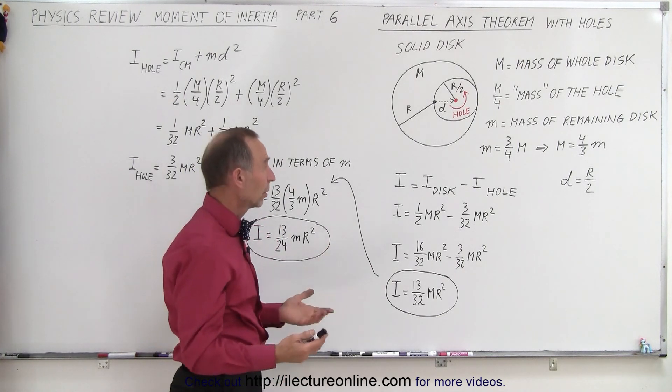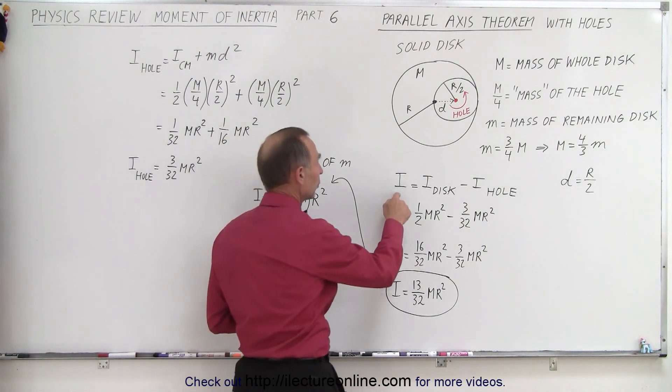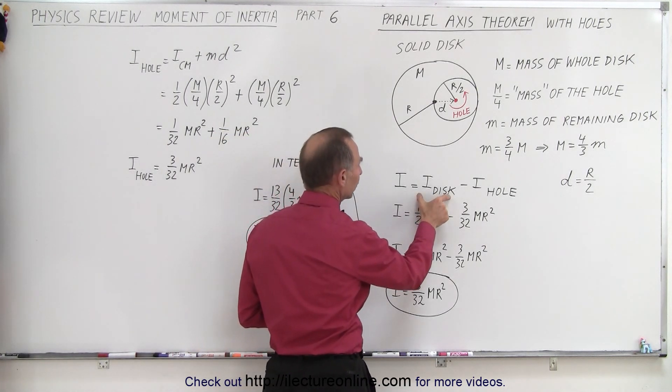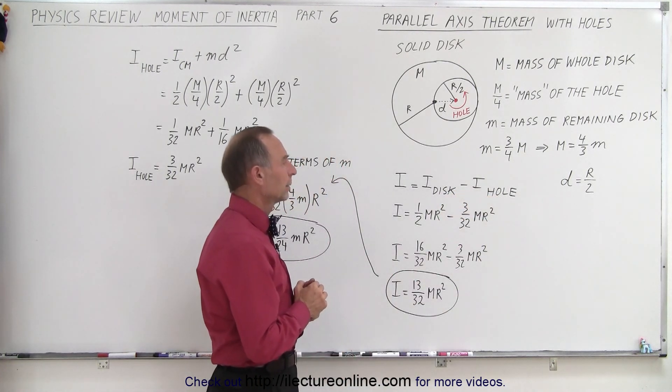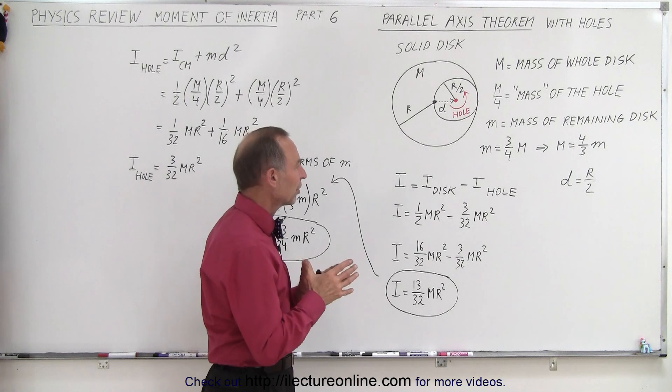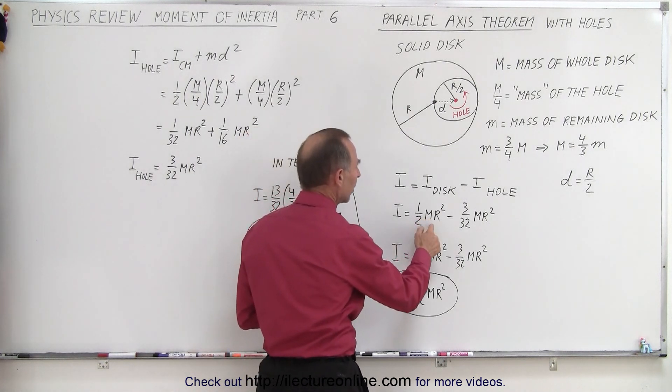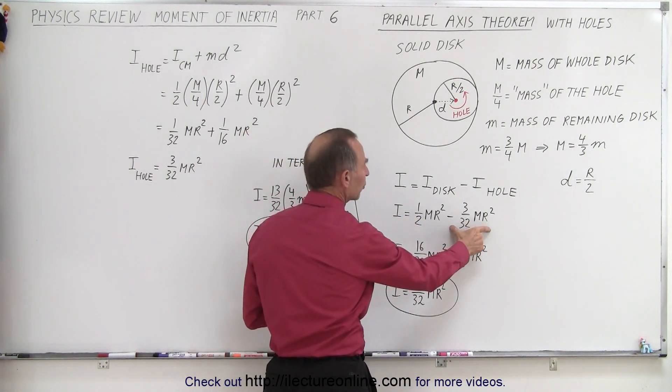We know that for the total moment of inertia we simply take the moment of inertia of the disc and subtract from that the moment of inertia of the hole. The moment of inertia of the disc would be one half MR squared, but what would be the moment of inertia of the hole?